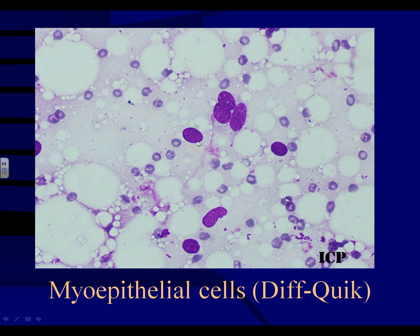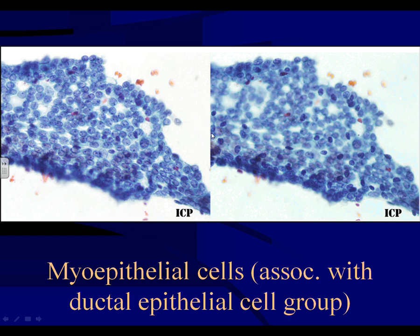Here's how myoepithelial cells sometimes appear: most of the time as single cells in the background, but you can also see them within or overlying the epithelial group by changing the plane of focus. In one plane you see all ductal epithelial cells, but looking more closely you can see the darker, more hyperchromatic, more oval football-shaped myoepithelial cells among them. The other cells with more open chromatin and slightly larger nuclei with nucleoli are your ductal epithelial cells.